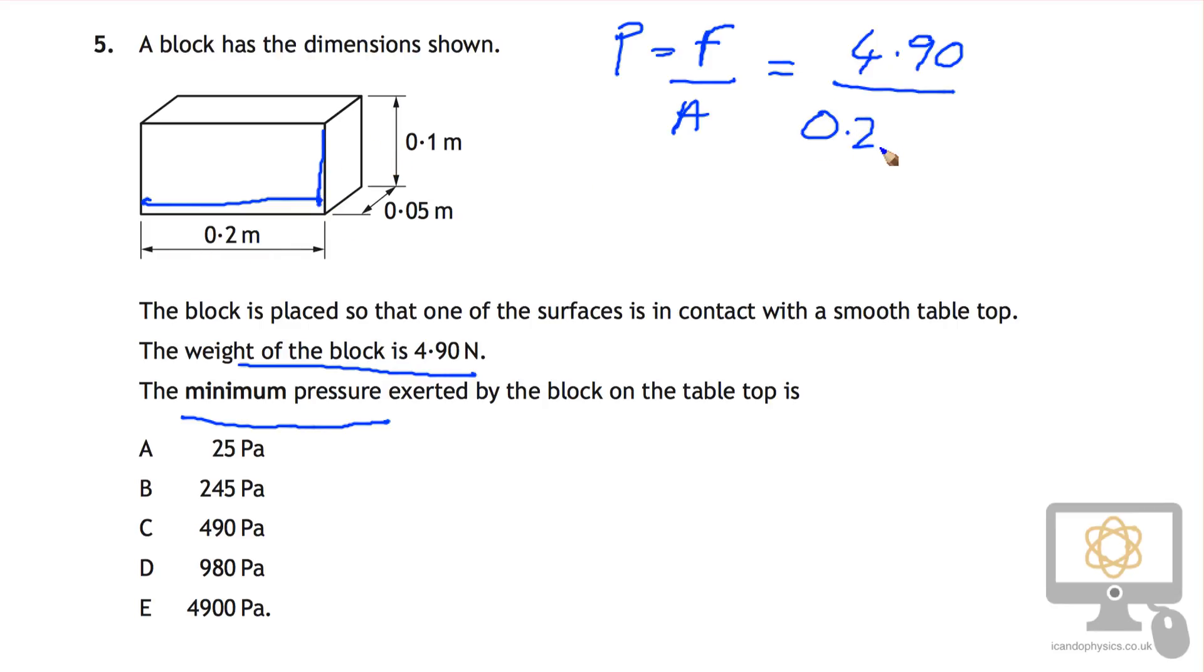So our area has a value of 0.2 multiplied by 0.1, and that's equal to... oops, I don't mean that... it's equal to 0.02.